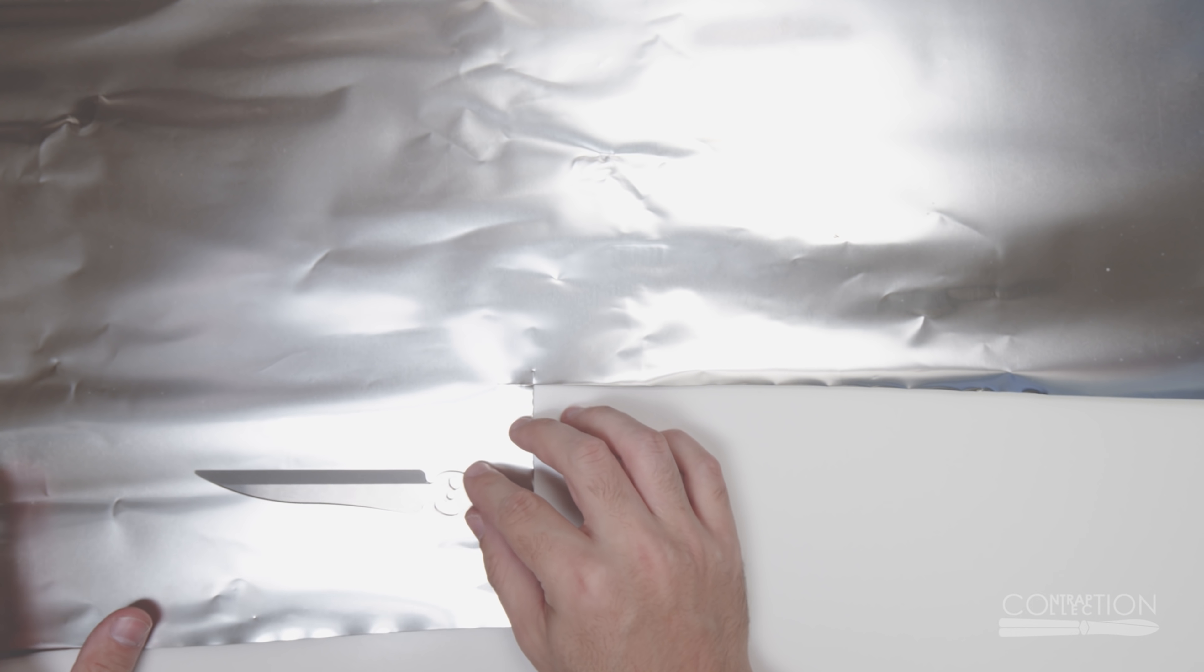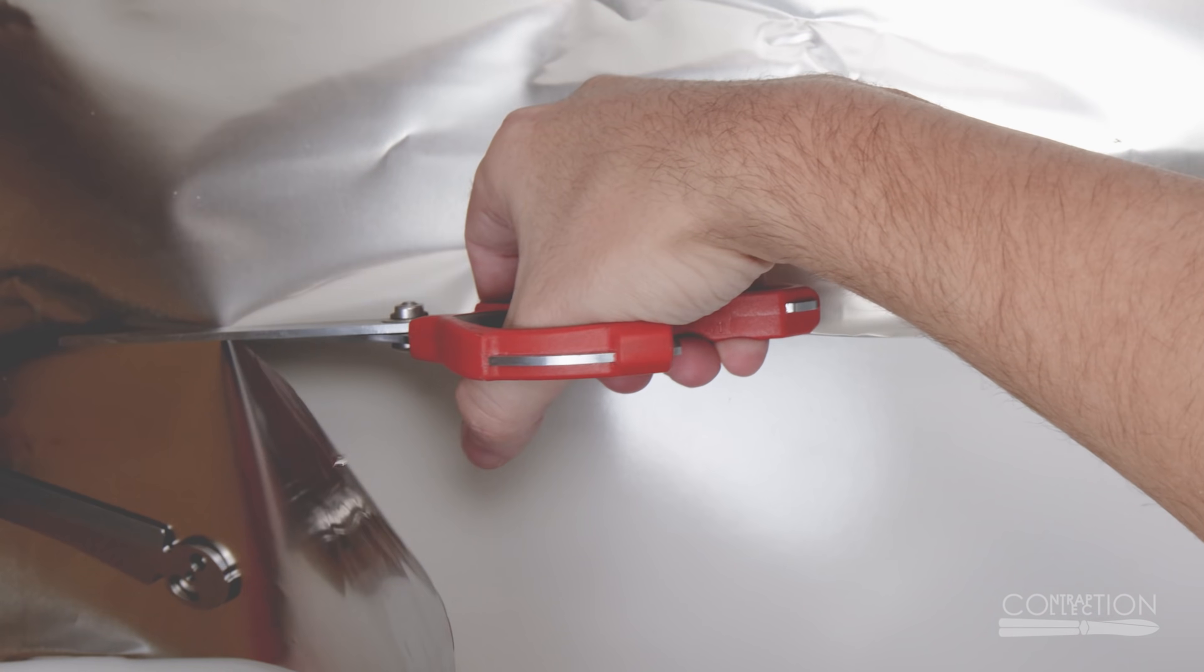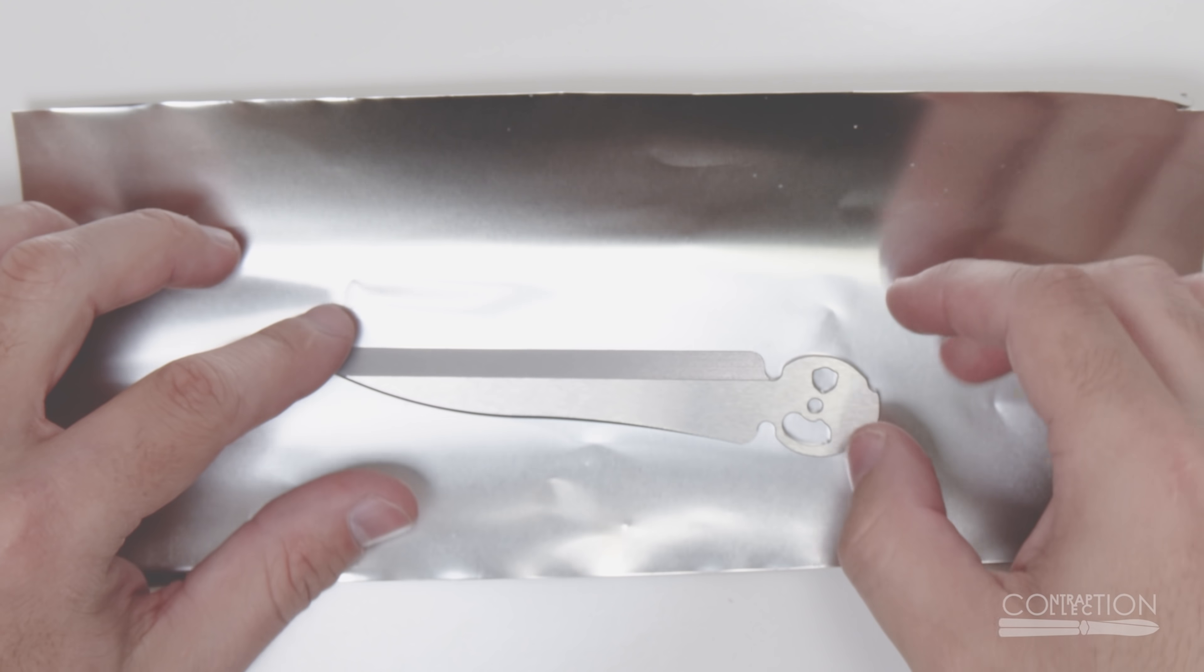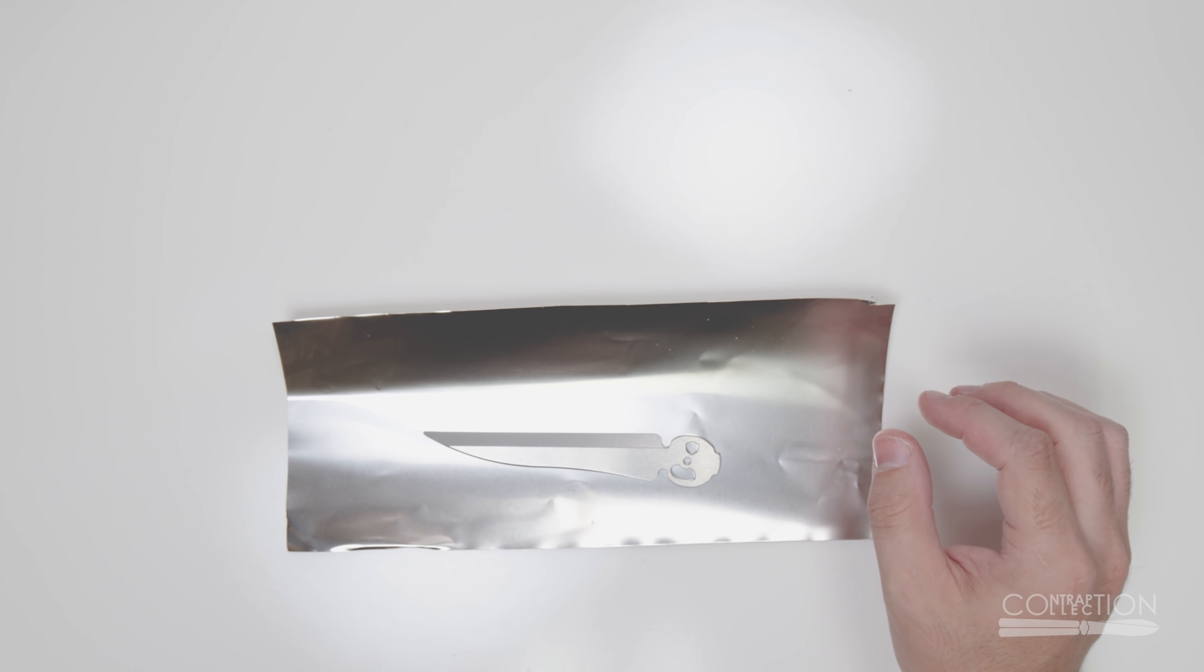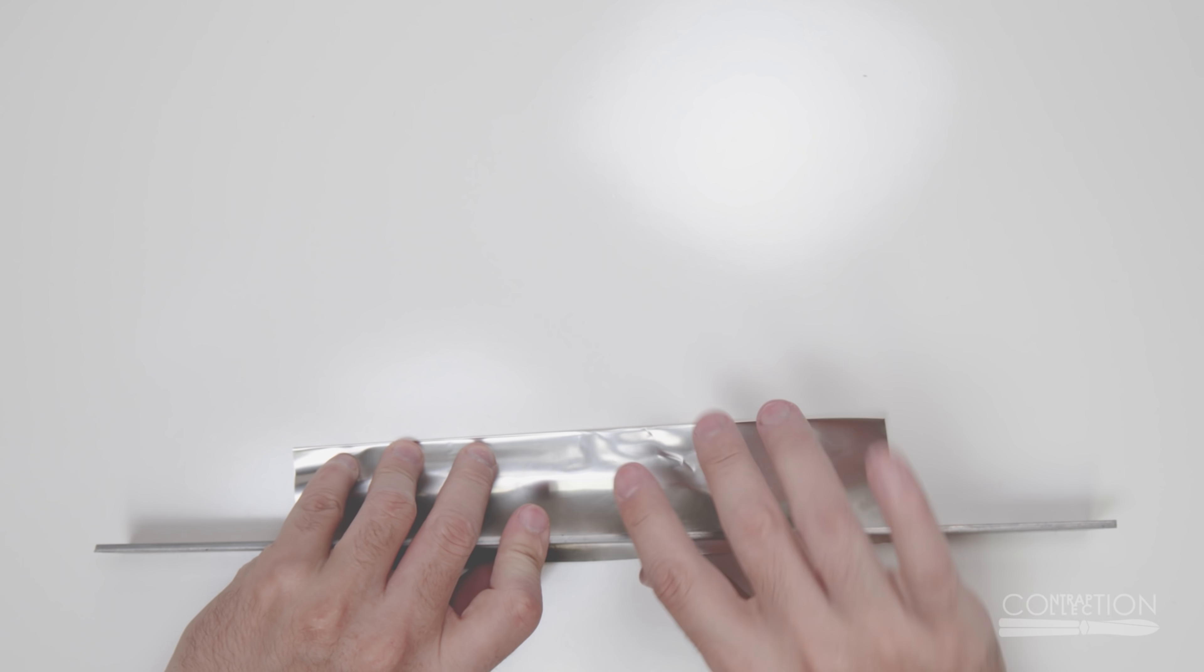The next step is to wrap the blades in foil. This will help reduce how much oxygen is absorbed into the steel, which would weaken it. I'm just guessing the size of piece I need. I'm not sure the best way to do this, and I cut myself.